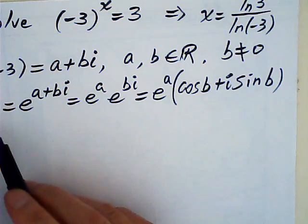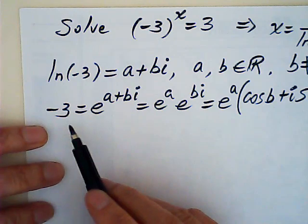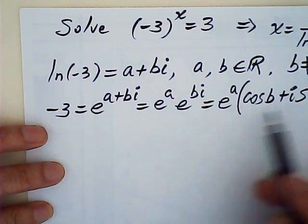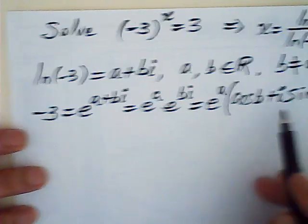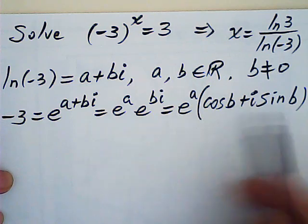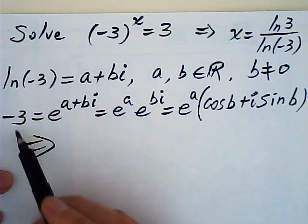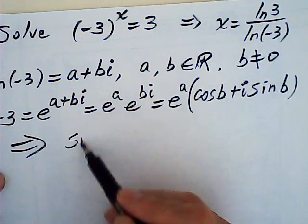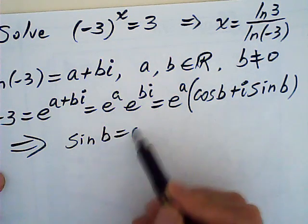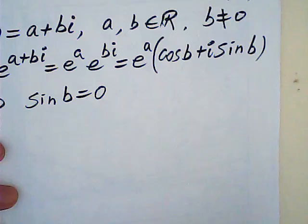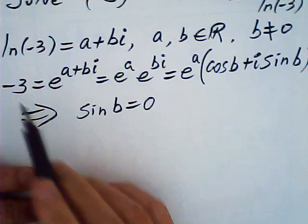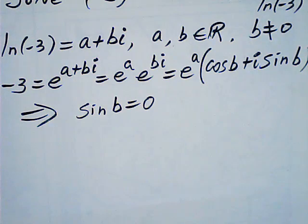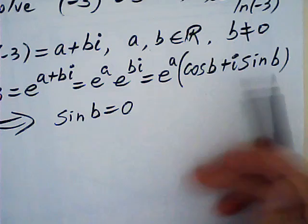But this side is negative 3. This side, you have two parts, real and imaginary. Therefore, because this one has no imaginary part, sine b must be zero. Because this side is negative 3, and this side, the imaginary part must be zero.